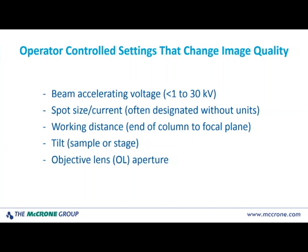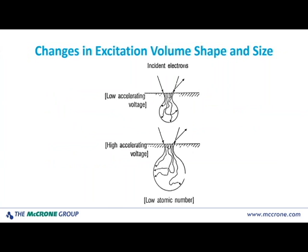So if you can tilt it just a few degrees sometimes, you can get an amazing effect on image quality. We also want to take a look at our objective lens, if this is available on your instrument for adjusting. As you change the size, you can affect the image quality. First, we'll take a look at what happens to our excitation volume if we're looking at low atomic number material.